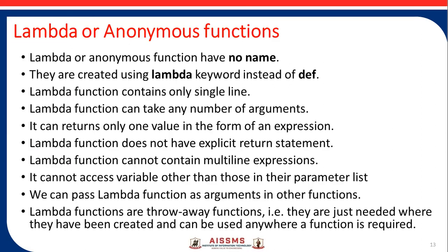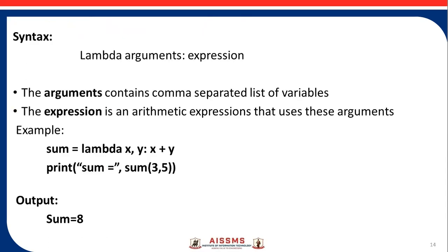Next is the lambda or anonymous function. Anonymous functions have no name. They are created using the lambda keyword instead of def. A lambda function contains only a single line and can take any number of arguments, but it can return only one value in the form of an expression. Lambda functions do not have an explicit return statement and cannot contain multi-line expressions. They cannot access variables other than those in their parameter list. Lambda functions are throwaway functions — they are defined where they are needed and can be used anywhere a function statement is used. The syntax is: lambda arguments: expression.